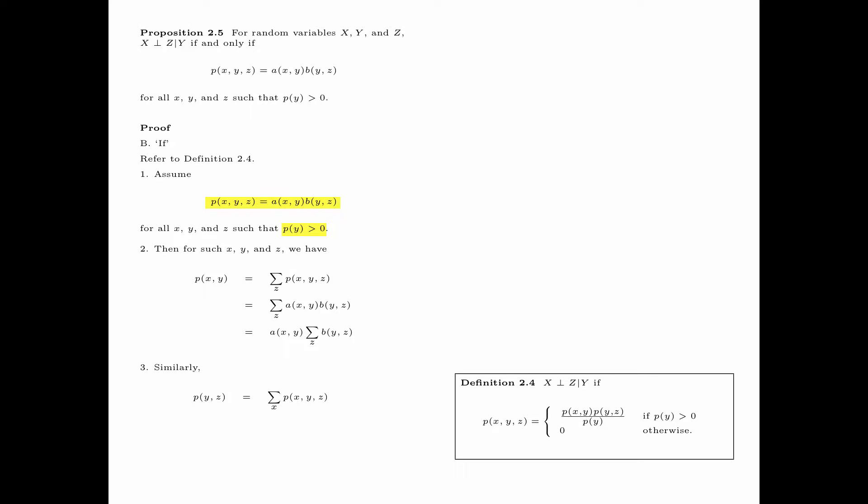Similarly, p(y,z) is obtained by summing p(x,y,z) over all x, where p(x,y,z) equals a(x,y) times b(y,z). Again, b(y,z) does not depend on x, so we can move it outside the summation to obtain b(y,z) times the summation over x of a(x,y).